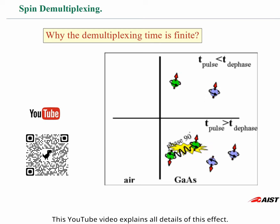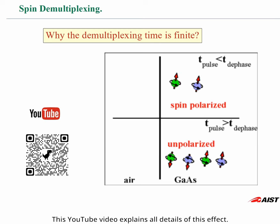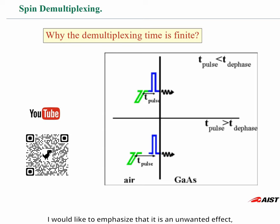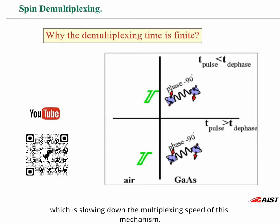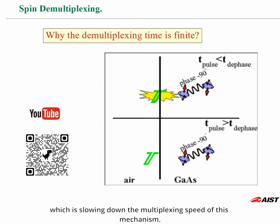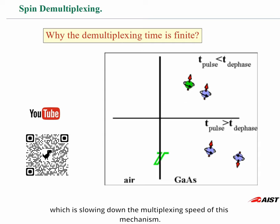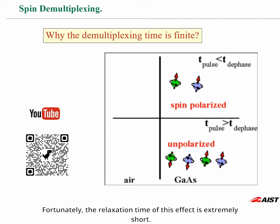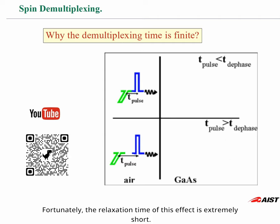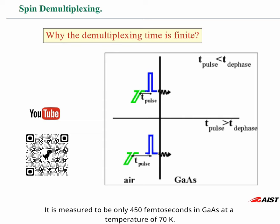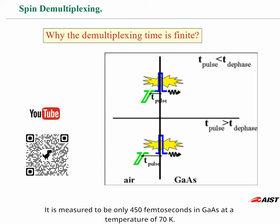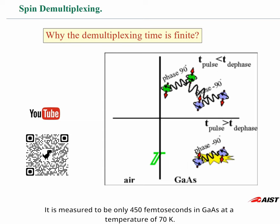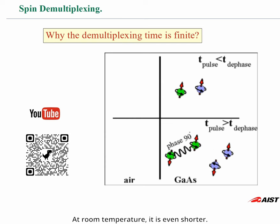A YouTube video explains all details of this effect. I would like to emphasize that it is an unwanted effect which is slowing down the demultiplexing speed of this mechanism. Fortunately, the relaxation time of this effect is extremely short. It is measured to be only 450 femtoseconds in gallium arsenide at a temperature of 70 Kelvin. At room temperature, it is even shorter.